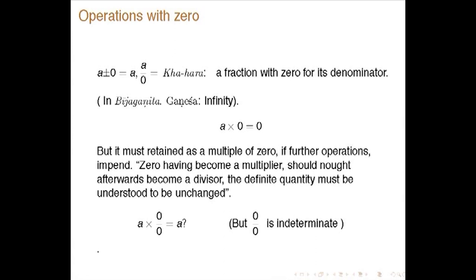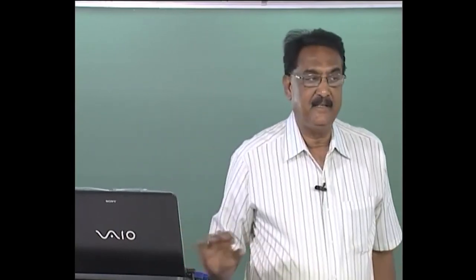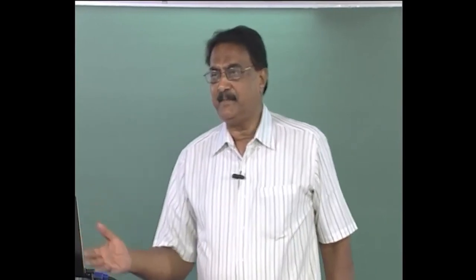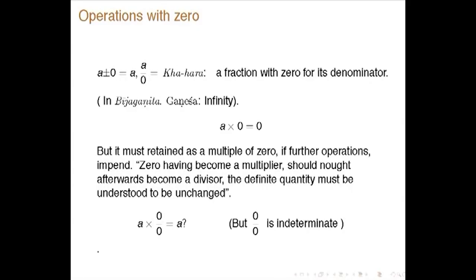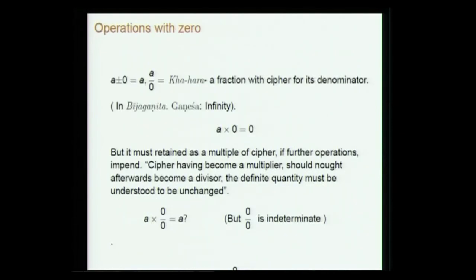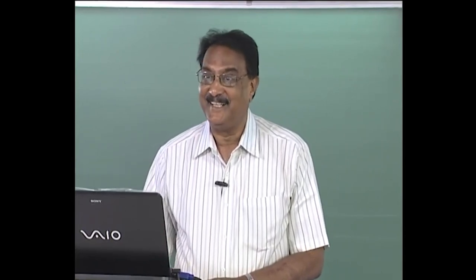Ganesha Daivagna in his commentary mentions that a/0 (khahara) is infinity. In Ganita Sarasangraha there was confusion about this, but now it is clear. When a × 0 appears, do not just set it equal to 0 if a subsequent division by 0 may occur. He seems to be suggesting that a × 0 / 0 = a, though in modern terms 0/0 is indeterminate depending on how it arises — the confusion is acknowledged. He considers these operations with zero in more detail in his work Bija Ganita.